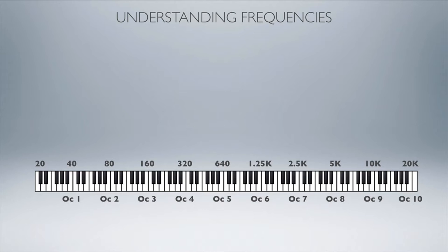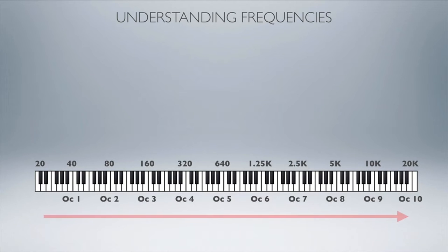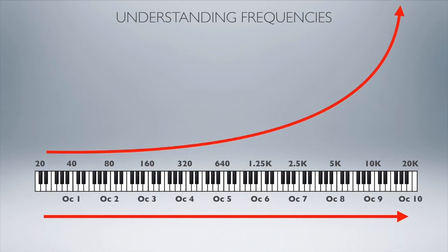You can see that the octave relationship is completely linear — octave 1, 2, 3, 4, and so on. However, the Hertz relationship is not linear at all. It is completely exponential. It goes up dramatically the further you go to the right-hand side.